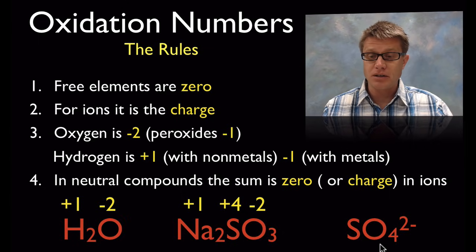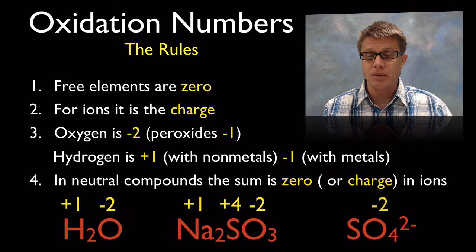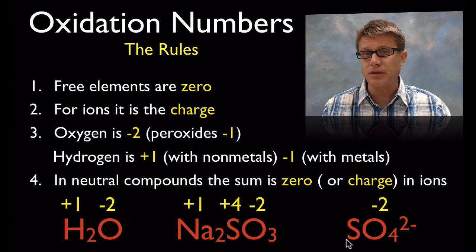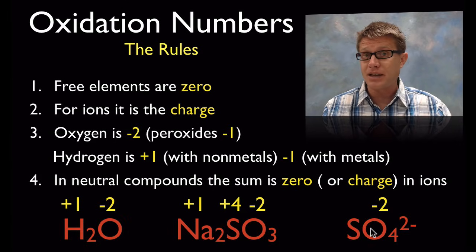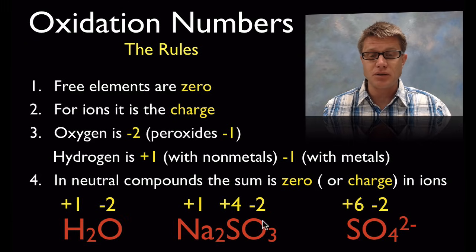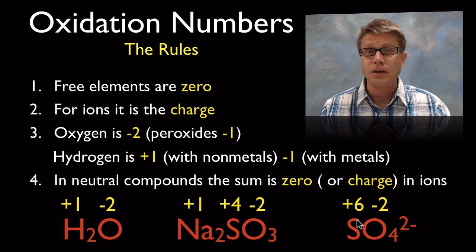Looking at the sulfate ion, SO₄²⁻: oxygen is minus 2, and with 4 oxygens that gives minus 8. Since the ion has a charge of minus 2, the sulfur has to be plus 6. You can see that sulfur's oxidation number actually changes depending on what compound it's in.